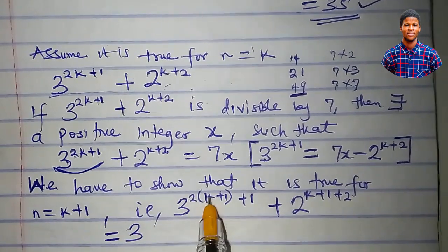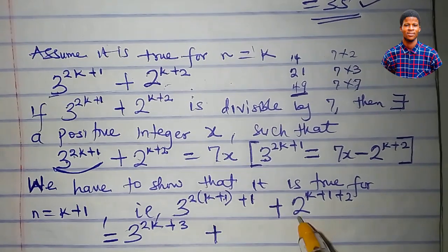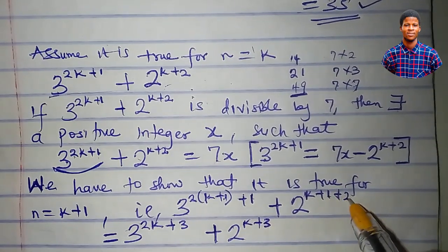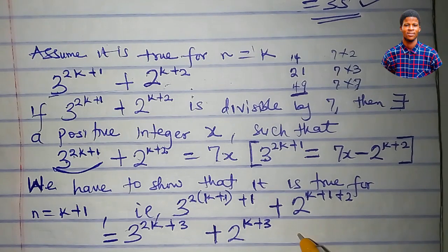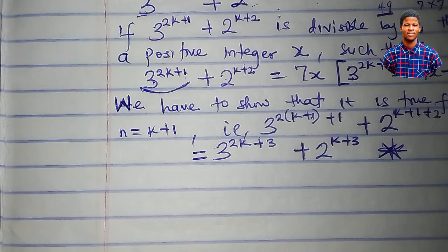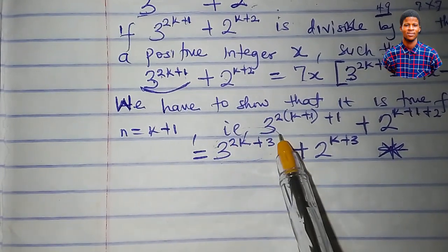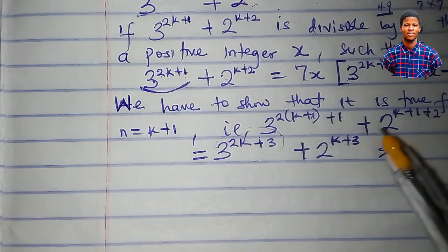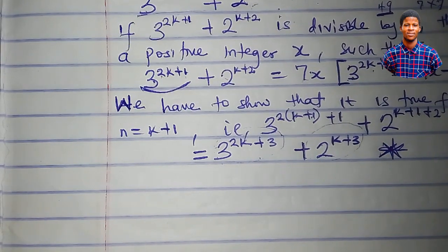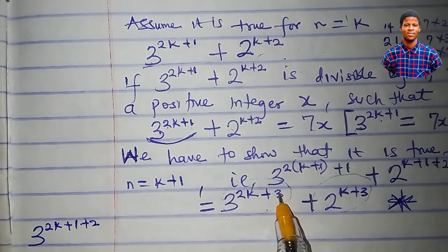Simplifying the exponents: 2 times k is 2k, and 2 times 1 is 2, plus the 1 gives 3 — so we have 3^(2k+3). And k plus 1 plus 2 is k plus 3 — so we have 2^(k+3). We want to show that this expression 3^(2k+3) + 2^(k+3) is divisible by 7, and we do this by factoring out 3^(2k+1).